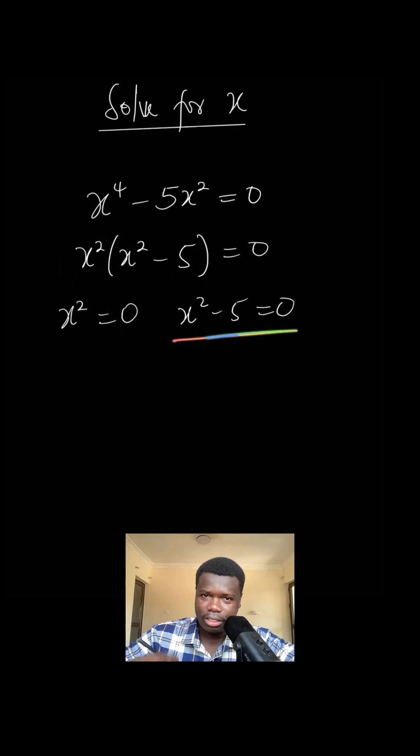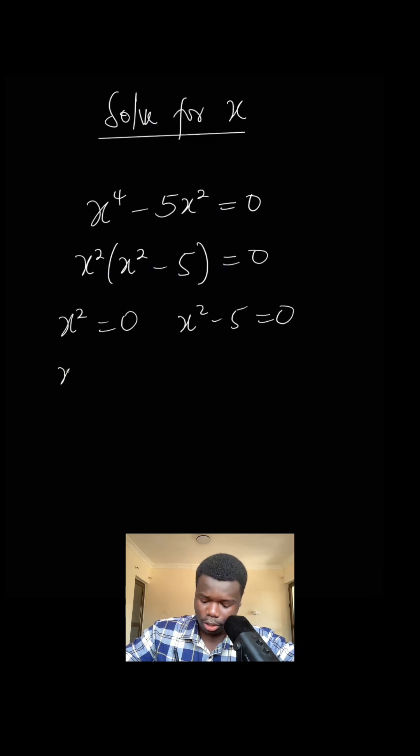To solve this we can find the square root of both sides. Square root of x^2 and square root of 0, so square root of zero is equal to zero. And this is also a quadratic equation on its own.